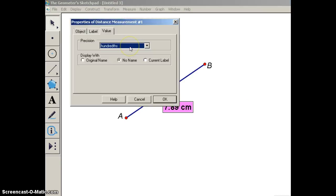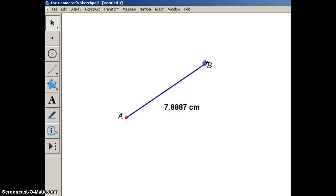If I want to round to four places, then you would change this to the ten thousandths place and you would hit OK, and now Sketchpad will give you measurements rounded to four places or to the ten thousandths place.